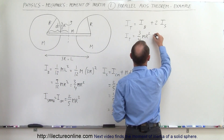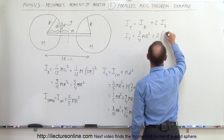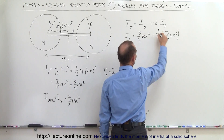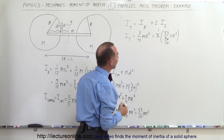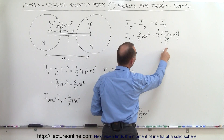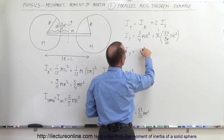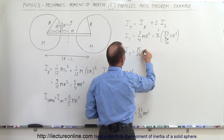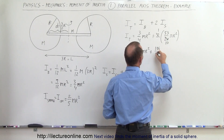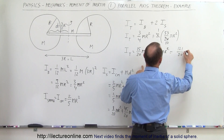Remember we have two spheres, so we add two times (53/20) mr², which equals (106/20) mr². Now combining with the bar's contribution, the common denominator is 20: (3/4) mr² becomes (15/20) mr². Adding (15/20) + (106/20) gives (121/20) mr² as the total moment of inertia.